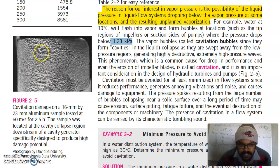This is cavitation damage on a 60 millimeter by 23 millimeter aluminum sample tested at 60 meters per second for 2.5 hours. The sample was located at the cavity collapse region downstream of a cavity generator specifically designed to produce high damage potential.